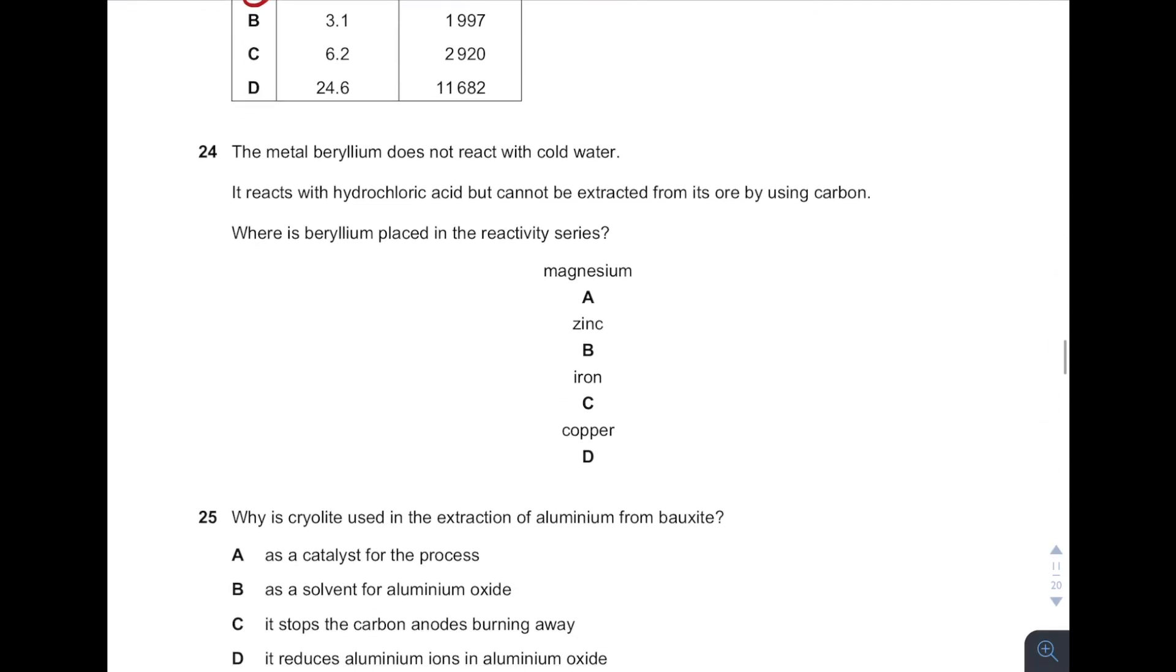Okay, then 24. Metal beryllium does not react with cold water but it reacts with acid. But it cannot get extracted from the ore by using carbon. Which means from here we know that it is less reactive than carbon. Based on reactivity series, carbon is placed in between aluminum and zinc. So carbon is more reactive than zinc. And from here we know that beryllium is more reactive than carbon. That's the reason why it cannot get displaced by carbon. So answer is A.